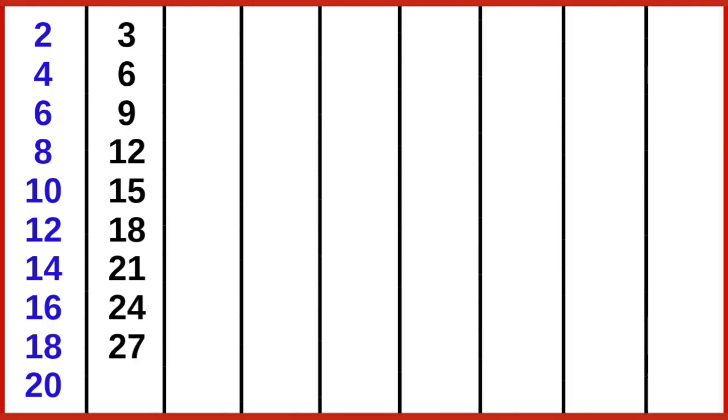2 tens are 20. 3 ones are 3, 3 twos are 6, 3 threes are 9, 3 fours are 12, 3 fives are 15, 3 sixes are 18, 3 sevens are 21, 3 eights are 24, 3 nines are 27, 3 tens are 30.